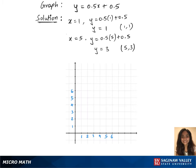We have those two points. Let's plot them on the graph now. So, (1, 1) is there. (5, 3) lies there. Now, let's join those two points. Yep, that's our graph for the given equation.